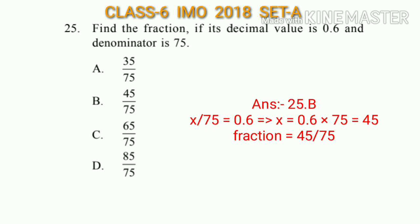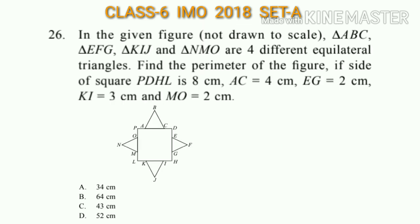Question number 26: In the given figure, triangle ABC, triangle EFG, triangle KIJ, and triangle NMO are four different equilateral triangles. Find the perimeter of the figure if the side of square PDHL is 8 centimeters. AC = 4 cm, EG = 2 cm, KI = 3 cm, and MO = 2 cm. Since all are equilateral triangles, all sides of each triangle are equal: AB = BC = AC = 4 cm.